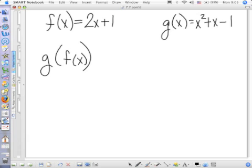Written differently but means the same thing. I want you to get used to seeing it both ways. G composed of F of X, and then evaluate it if X is equal to 10.